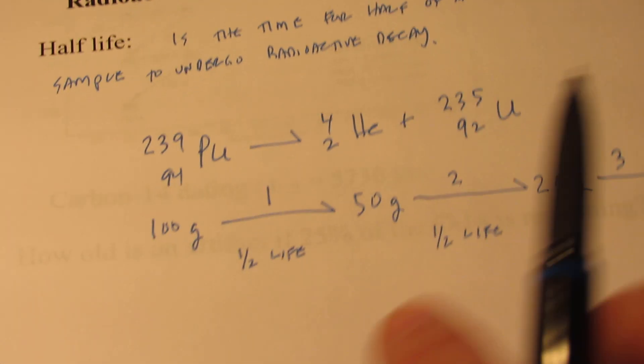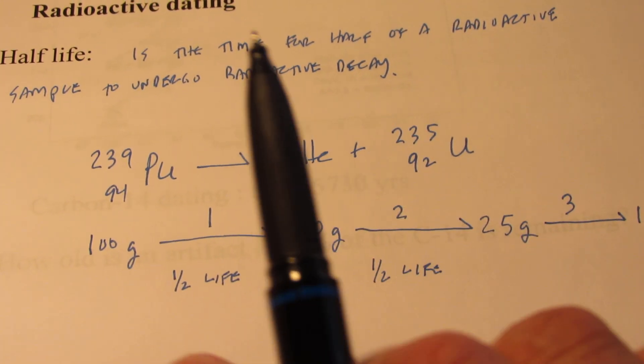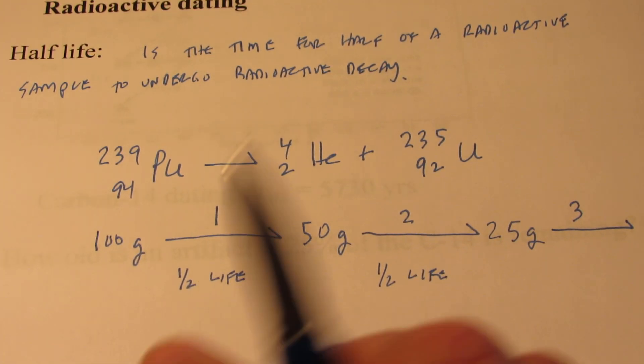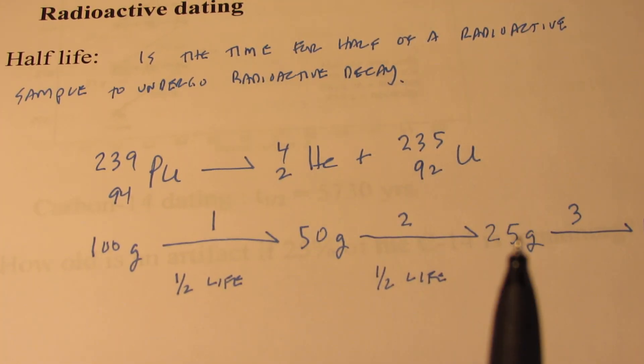So please don't think that after two half-lives your radioactive sample is gone. Every time you go through a half-life, you have one half remaining from your initial amount at the beginning of the previous half-life.